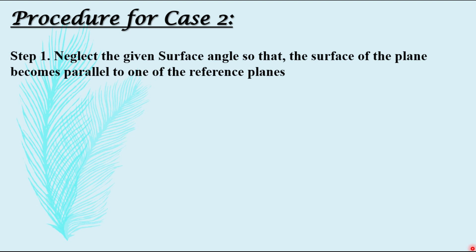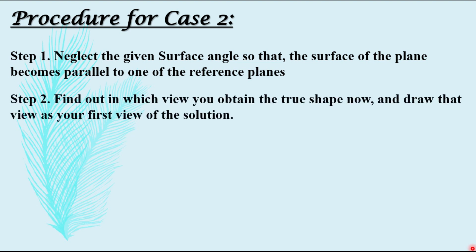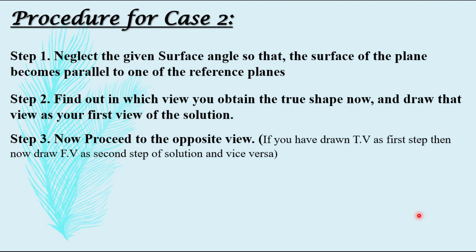The procedure for case two is valid for both sub-cases A and B. Step one: neglect the given surface angle so that the surface of the plane becomes parallel to one of the reference planes. Step two: find out in which view you obtain the true shape and draw that view as your first view. Step three: proceed to the opposite view — if you drew the top view first, now draw the front view, and vice versa.